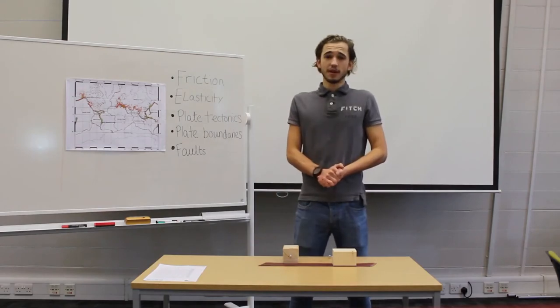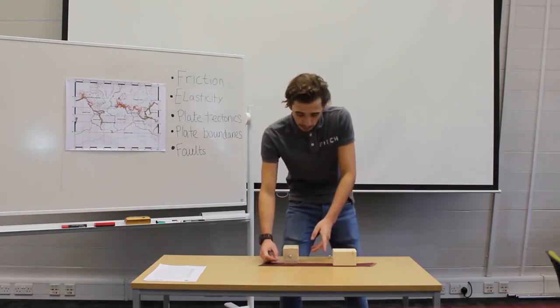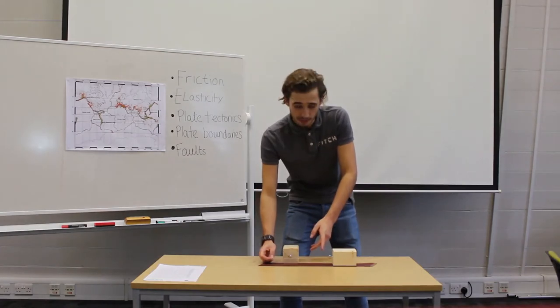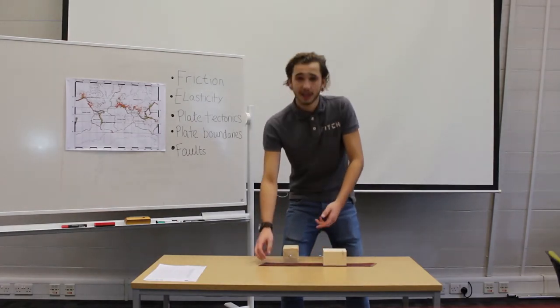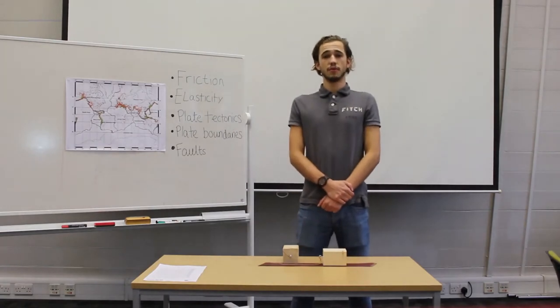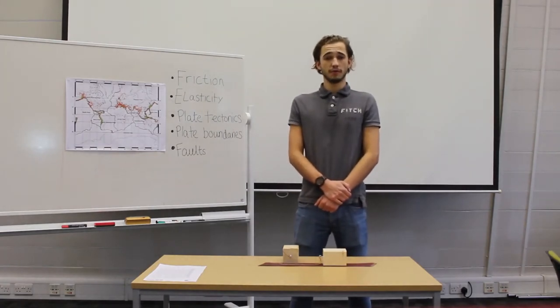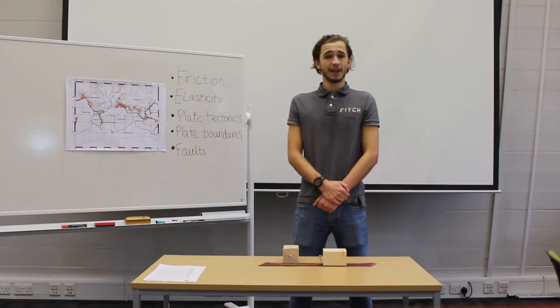It needs to be pointed out, though, that not all of the elastic energy is lost from the rubber band after the block slips. We can see this because it's still taut. Similarly, not all of the energy is lost from the material around the fault after an earthquake. These can lead to several aftershocks, although these are often smaller than the initial earthquake.